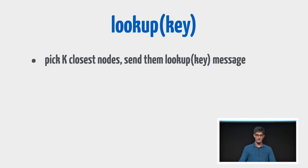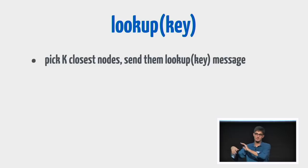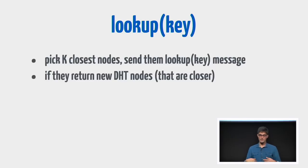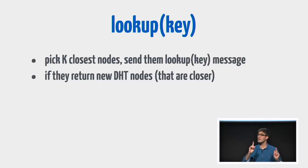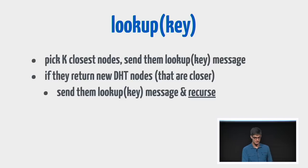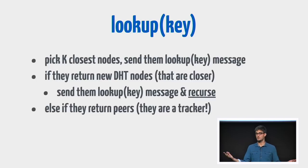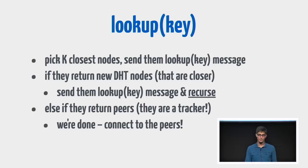To do a lookup in this table, we pick the K closest nodes to the key we're looking for from our table — in some areas we have dense knowledge, some areas not. We send those people a lookup message. If they're not actually responsible for tracking the key we ask about, they'll say: sorry, I can't give you peers for this torrent, but I can tell you about nodes that I know that are closer to the key you're looking for than me. So they tell me: you should try talking to these guys, they're actually closer. I send lookup messages to those people and continue recursing. Eventually I'll get to someone who can give me peers — they'll say: here are the IP addresses and ports for the guys you're looking for. That means I found the peers that are trackers for this torrent, and then I'm done and can connect to those peers.